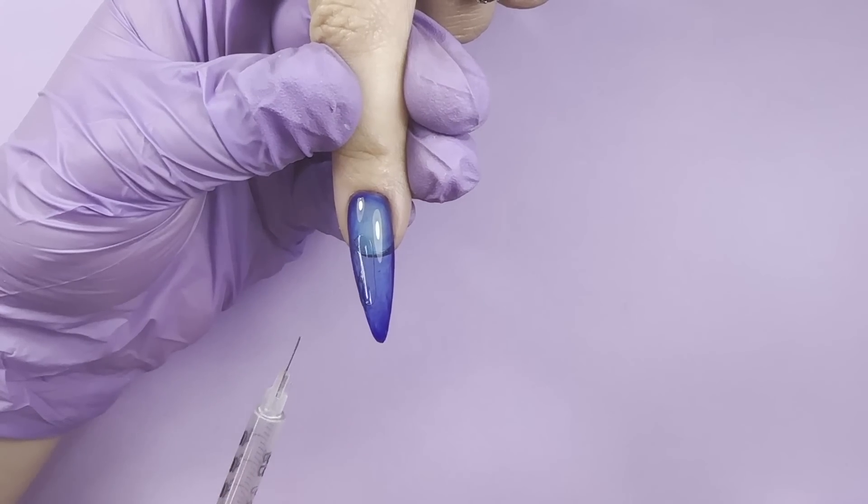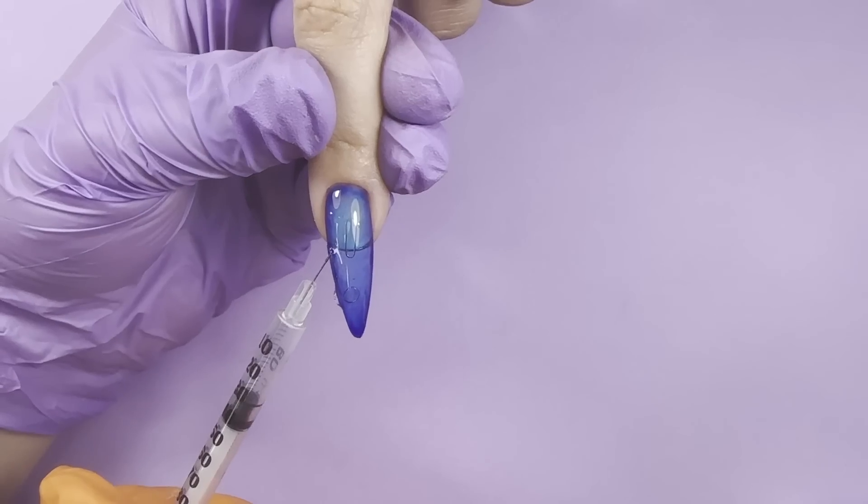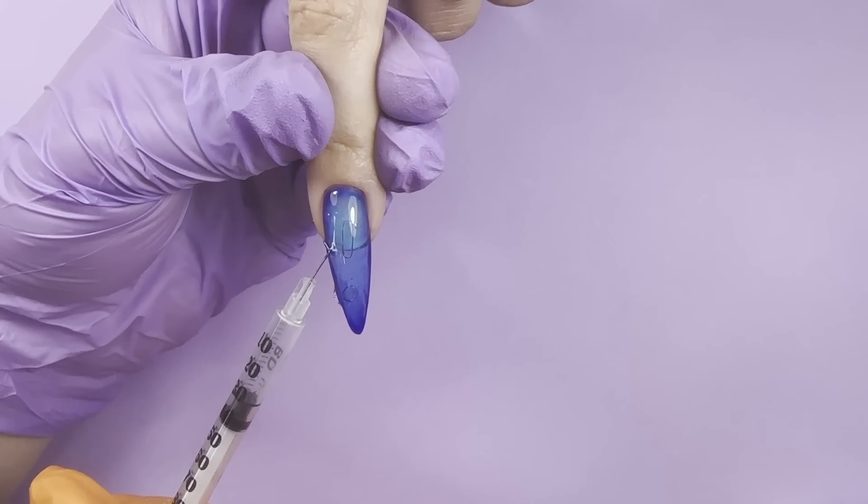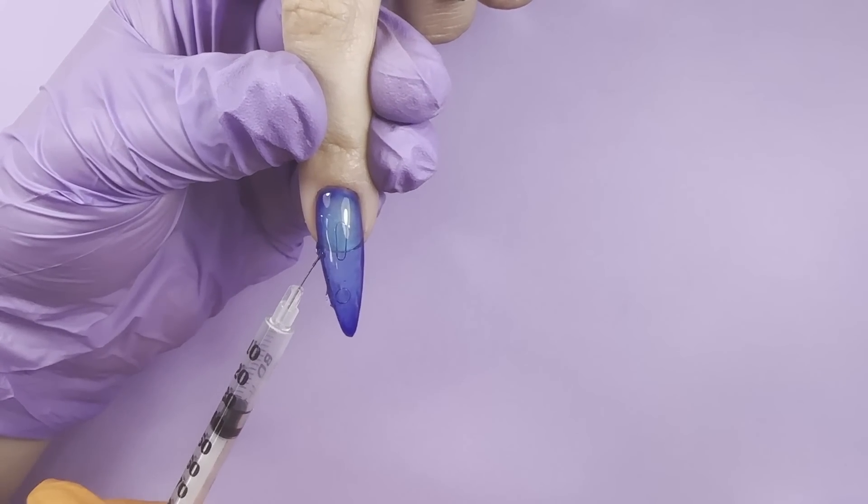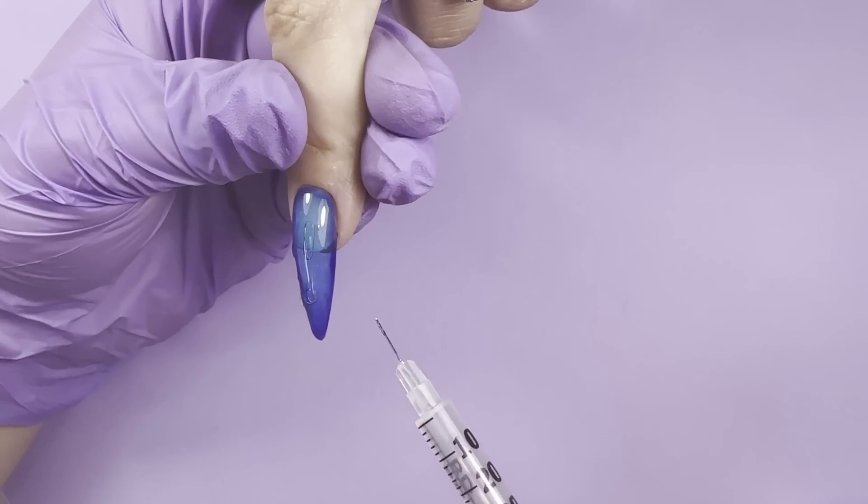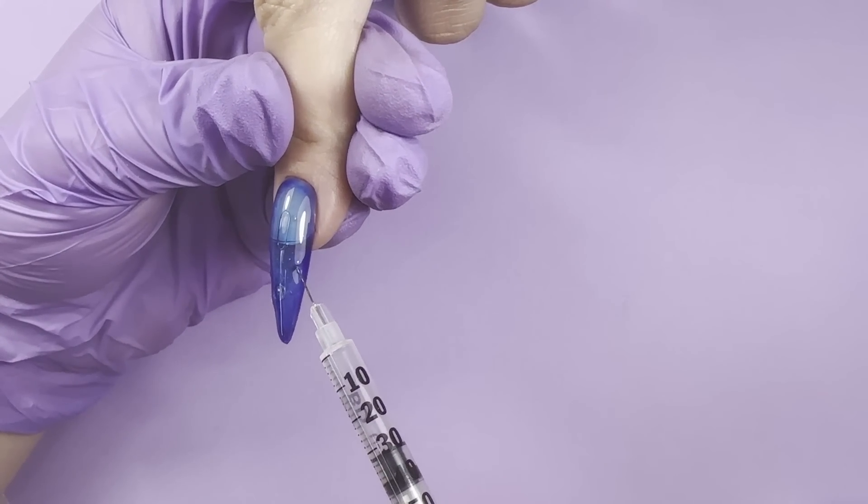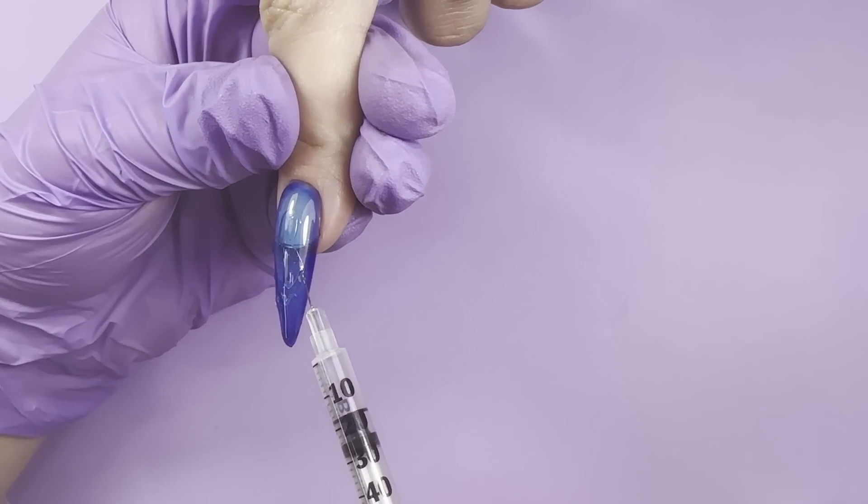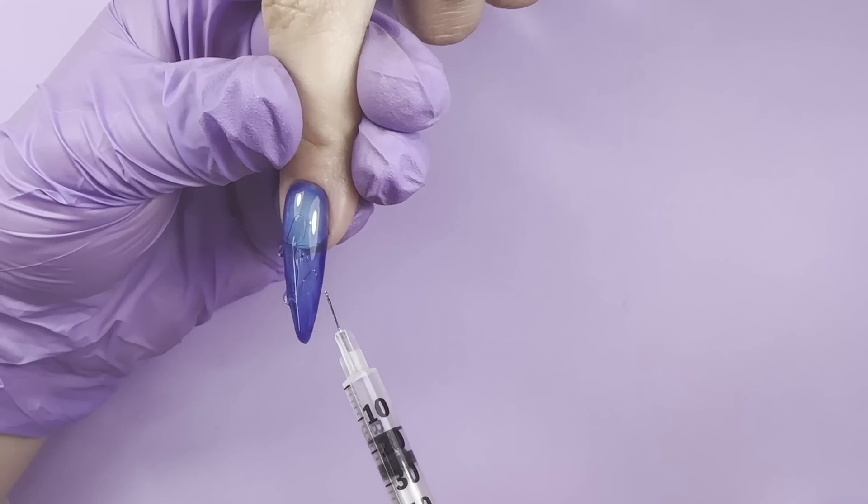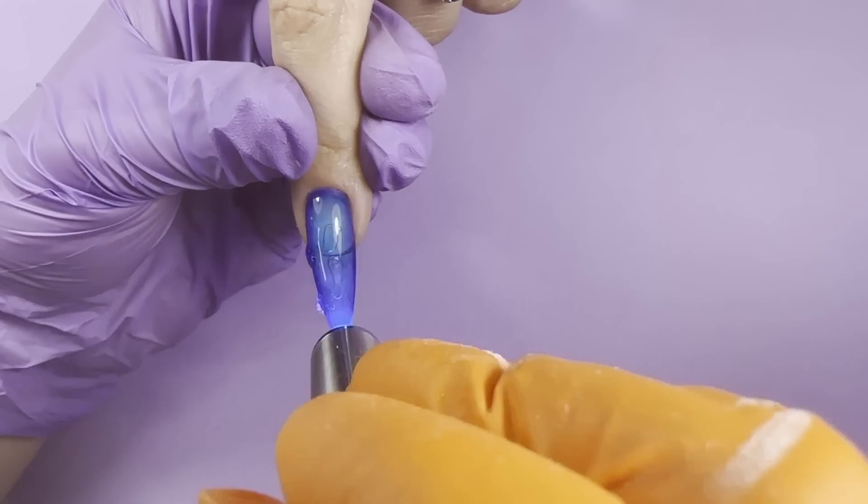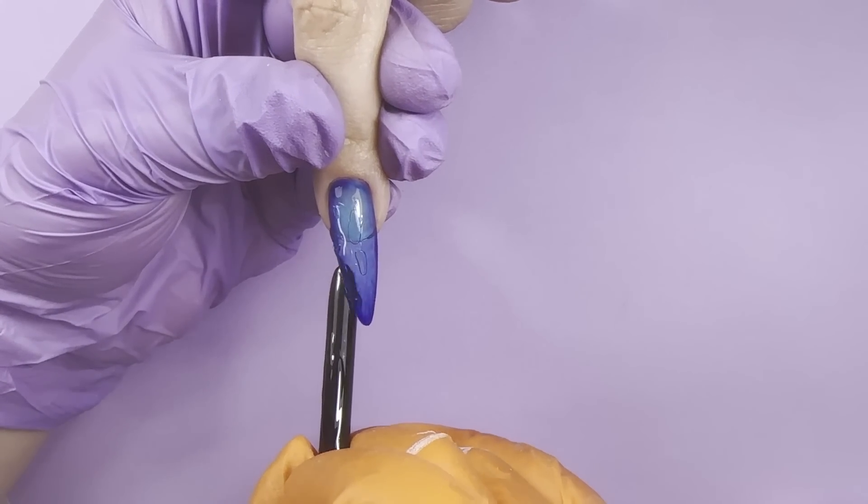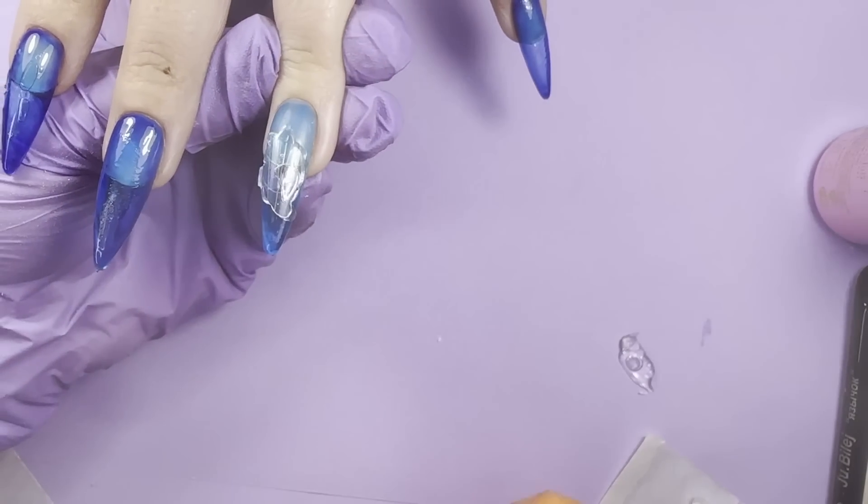Once you're happy with the shape of the bubbles, it is better to flash cure them again, so they will not move, and then fully cure for one minute in LED. I definitely liked the second method better, because it's easier and faster, and you will also not need to worry that now there's too much product on the top, and now you have to file and shape it.